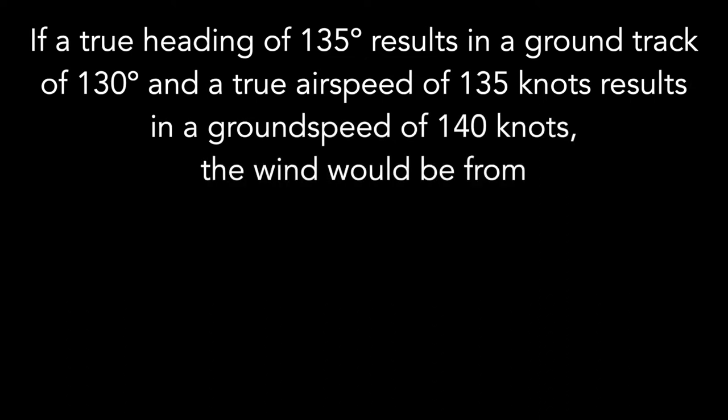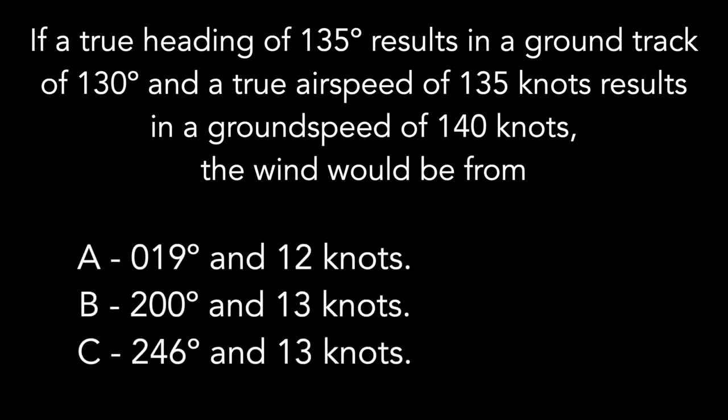If a true heading of 135 degrees results in a ground track of 130 degrees, and a true airspeed of 135 knots results in a ground speed of 140 knots, the wind would be from: A) 19 degrees and 12 knots, B) 200 degrees and 13 knots, or C) 246 degrees and 13 knots.